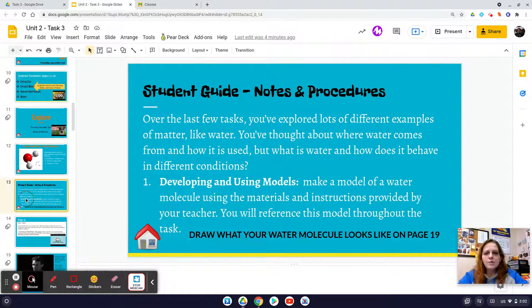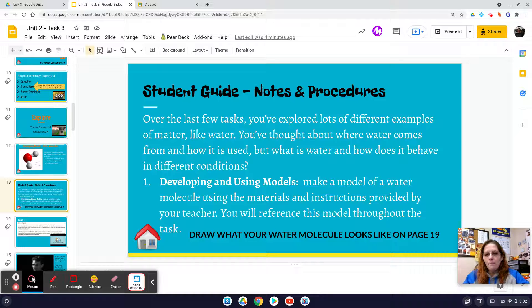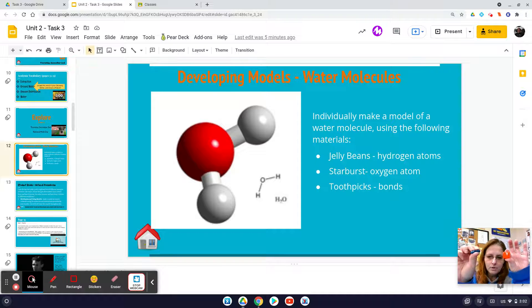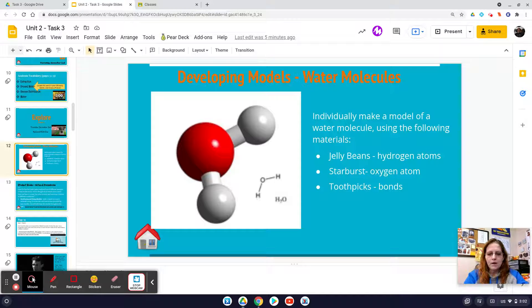Now, we're going to think about what a water molecule looks like. This is a water molecule. It's represented as one oxygen atom and two hydrogen atoms. So our oxygen atom is our starburst, and our hydrogen atoms are our jelly beans. Obviously our starburst is a square, so we are going to turn that into a circle using the heat from your hands. I'm going to show you how. I'm going to make myself a water molecule, H2O. So I'm going to open up my starburst.